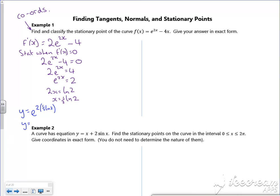Let me make sure my mic's still working. The 2 and the half will cancel, and I've got e^(ln2), and that's going to cancel. Then I've got minus 4 times a half ln2. So that's going to give me minus 2ln2. The e and the ln will cancel, I've got 2 minus 2ln2. So the coordinate would be a half ln2 as my x value, and 2 minus 2ln2 as my y value. You've got to be happy with working in exact form.